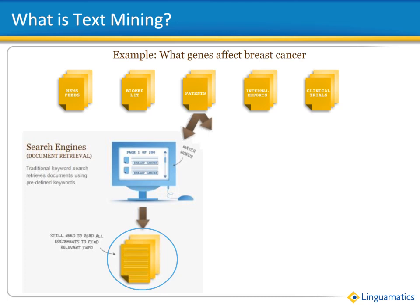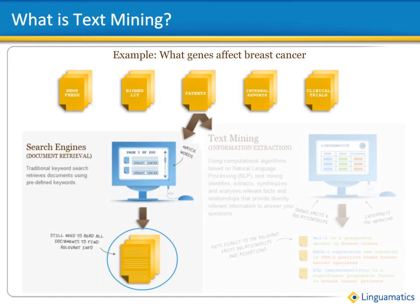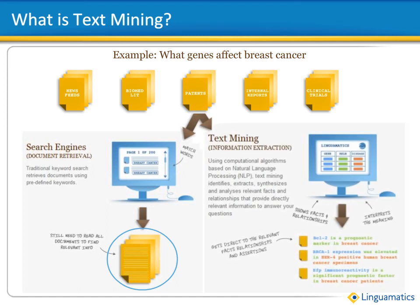In the text mining approach, the question can be expressed in an open way. I2E uses built-in vocabularies to expand out all the different ways genes and diseases can be expressed in the literature. It automatically extracts out the concepts — in this case genes and breast cancer — and finds the relationship between them using its natural language processing engine. The results are presented as a set of facts, relationships and assertions, with links to the original document for when additional context is required. This approach makes it much faster and more efficient to analyse the results and get to the right answers.